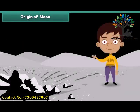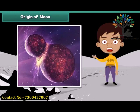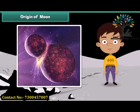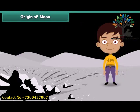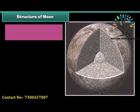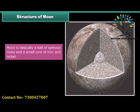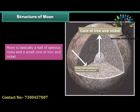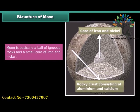Some suggest that an object of similar mass to that of Mars might have smashed into the Earth, creating a cloud of molten rock that eventually condensed into the moon. Looking at the interior of the moon: the moon is basically a ball of igneous rocks with a small core of iron and nickel, and there is a rocky crust consisting of aluminium and calcium.